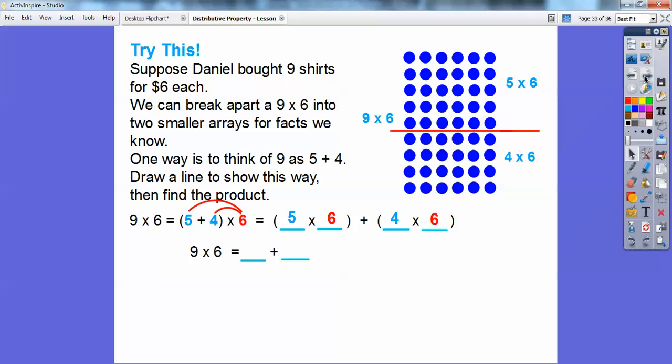So we go ahead and add 30 plus 24, and we get 54. So Daniel spent $54.